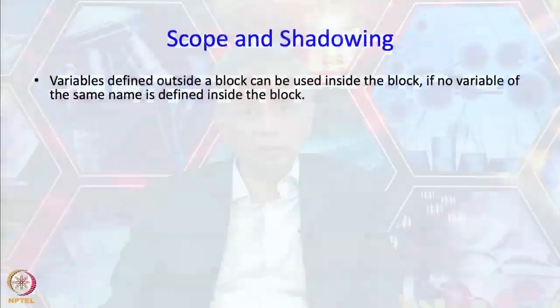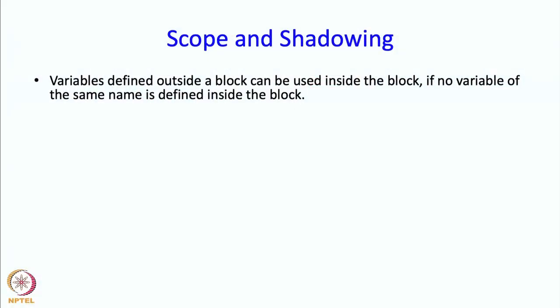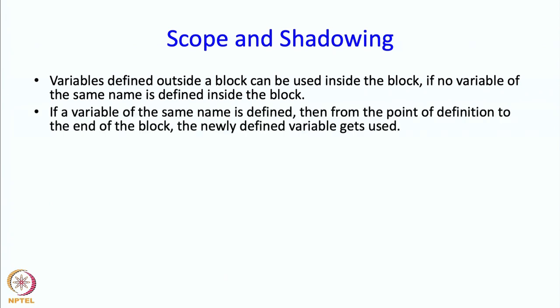Now once we have mechanisms to define variables at different places, we need to carefully understand what a certain variable name refers to. If a variable is defined outside a block, then it can be used inside the block, just as variable S was defined outside and got used inside. However, this can happen only if no variable of the same name is defined inside the block. If a variable of the same name is defined, then from the point of definition to the end of the block, the newly defined variable gets used.